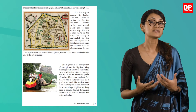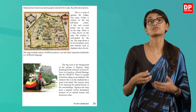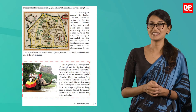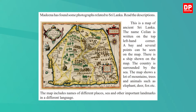Let's look at a reading activity found in your pupil's book, Unit 3, Activity 9. Madina has found some photographs related to Sri Lanka and you are asked to read the descriptions. The first picture is a map of ancient Sri Lanka — the name Ceylon is written on the top left-hand corner, a bay and several points can be seen, and there is a ship shown on the map. The country is surrounded by the sea, and the map shows mountains, trees and animals such as elephant, deer and fox, with names of places in different languages.